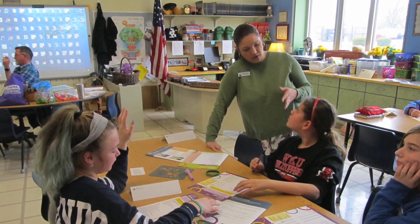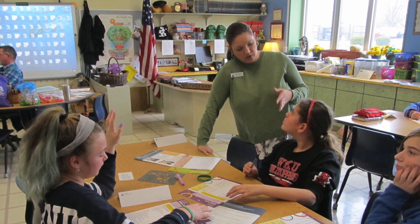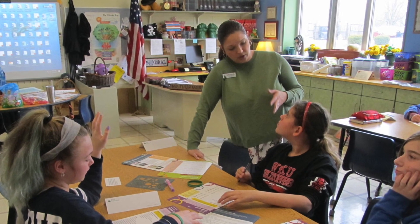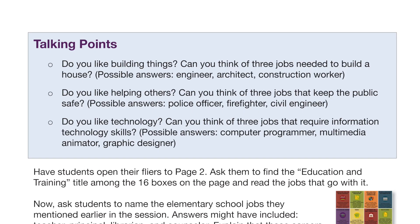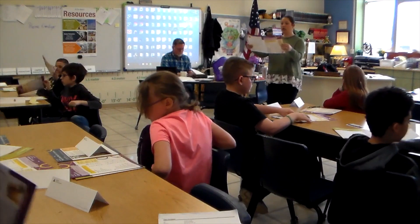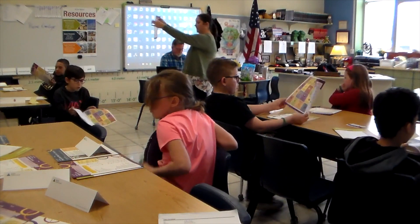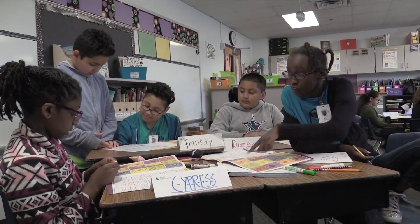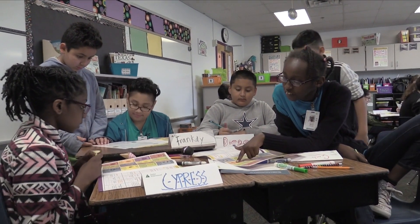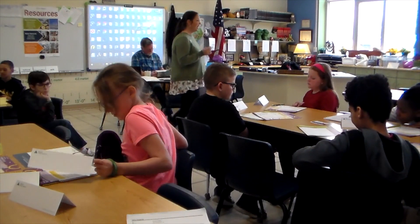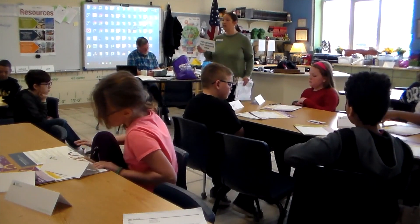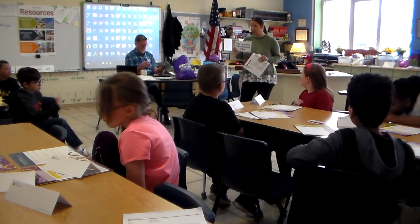Let students know that now that they have discussed their interests, they can begin to think about what kinds of jobs they might be interested in. Use the talking points in your guide to lead a brief discussion with the class. Ask students to open to page two of their flyers and find the education and training box on the page, then read the jobs that go with it. Refer back to the jobs they mentioned earlier in the session to introduce career clusters.